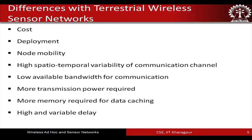The differences between terrestrial wireless sensor networks and underwater sensor networks are as follows. With respect to cost, terrestrial sensor networks are much cheaper compared to underwater sensor networks — an underwater sensor node is very costly and deployment is also much more difficult. Node mobility is also very different: in terrestrial sensor networks there can be active mobility moving nodes from one point to another.